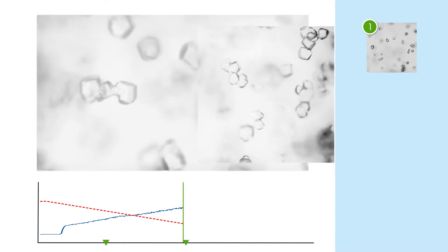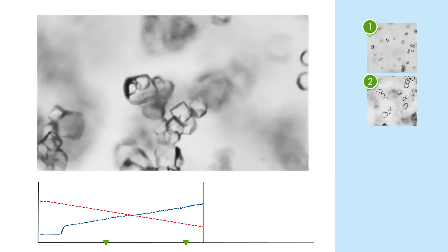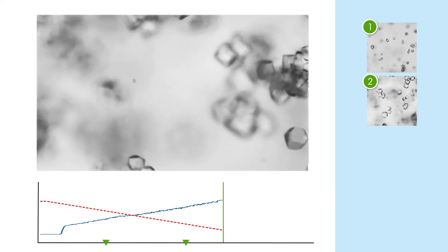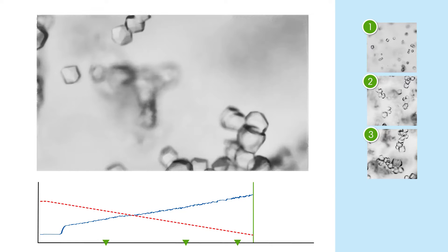Over time, the agglomeration continues with few individual crystals observed. Instead, long chains of agglomerates form, likely trapping impurities as they do so.